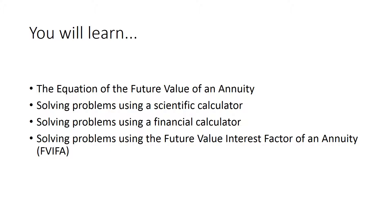Be careful — this video is only about the future value of an ordinary annuity, and not the annuity due. The difference between the two is that the payment of the ordinary annuity takes place at the end of each time period, whereas the annuity due takes place at the beginning of each time period. Also note that this video is not about the regular future value, which is a lump sum of money.